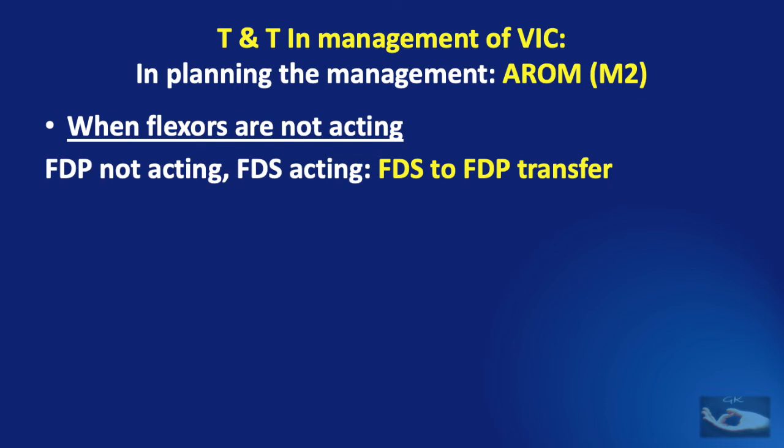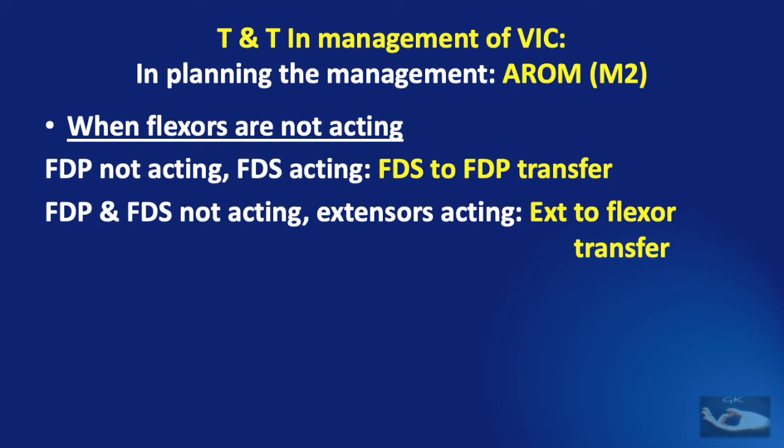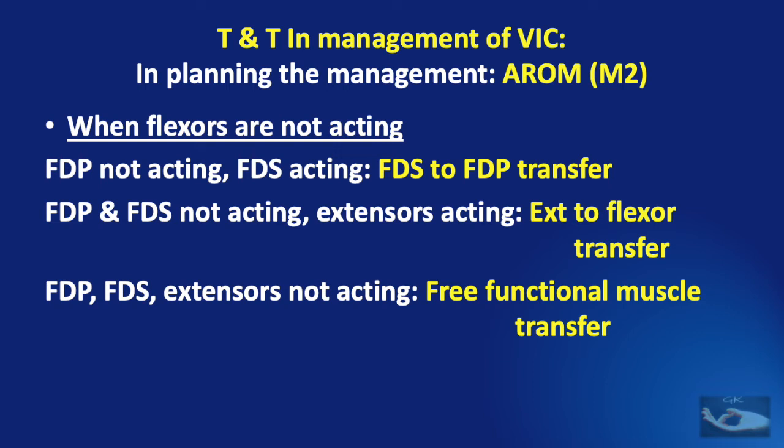In patients where the FDP is not acting, an FDS to FDP transfer can be planned. In cases where both the FDP and FDS are not acting but the extensors are acting, an extensor to flexor transfer can be planned. In severe cases where the FDP, FDS, and extensors are all not acting, a free functional muscle transfer will be required.